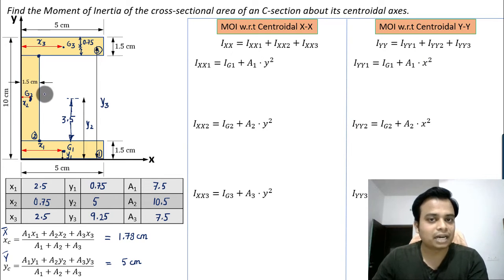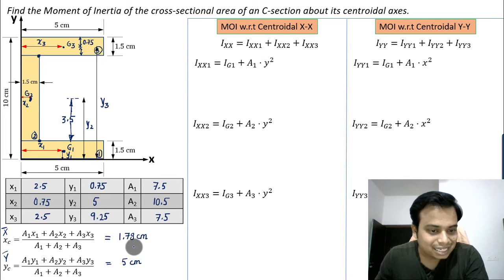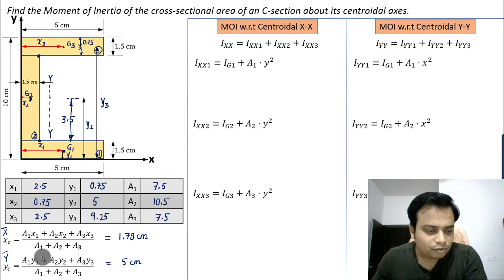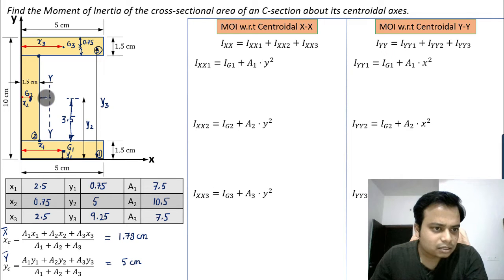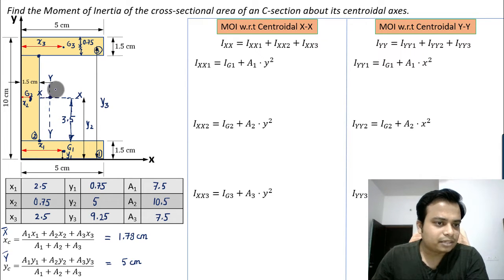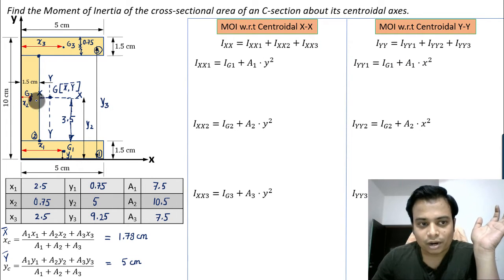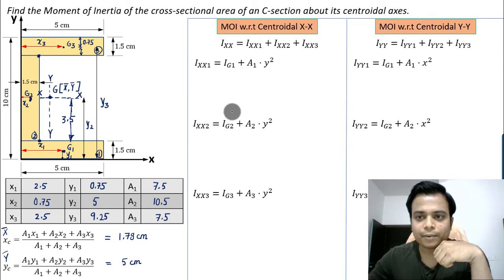Let's fix the centroid location. x̄ = 1.78 cm — since 1.5 is here, it's slightly ahead. This gives us the centroidal Y-Y axis. ȳ = 5 cm gives the centroidal X-X axis. So the main centroid has coordinates (x̄, ȳ) = (1.78, 5).